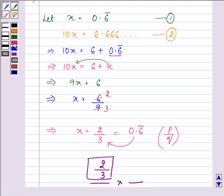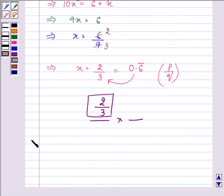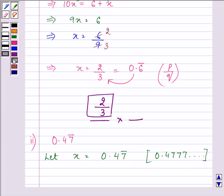Proceeding on further to the second part we have the expression as 0.47 bar. So again let us take x equal to 0.47 bar which means 0.4777 which goes on. Now on multiplying both the sides by 10 we have 10x is equal to 4.7 bar.